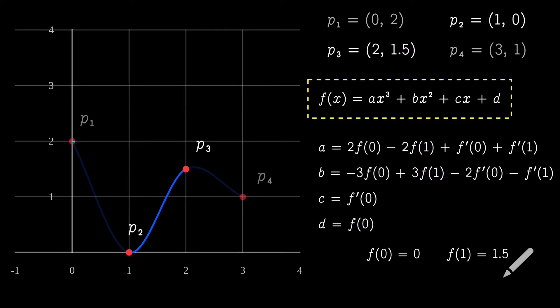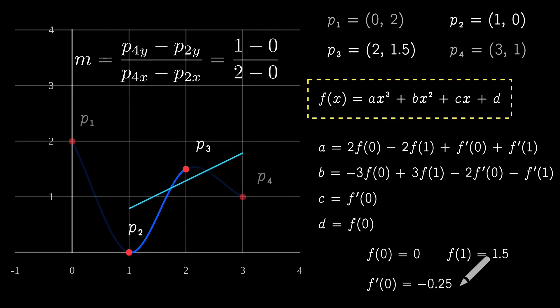To get the derivative at P2, a good choice is to use the slope of the line between the previous and the next point, which are P1 and P3 in this case. We do the same with P3 using P2 and P4.